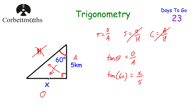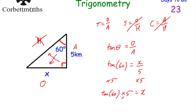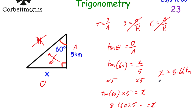We want to get X on its own, so we multiply both sides by 5. That gives tan(60°) × 5 equals X. It's important to include brackets when typing into the calculator. Tan(60) × 5 equals 5√3, or approximately 8.66025. So X equals 8.66 kilometres to two decimal places.